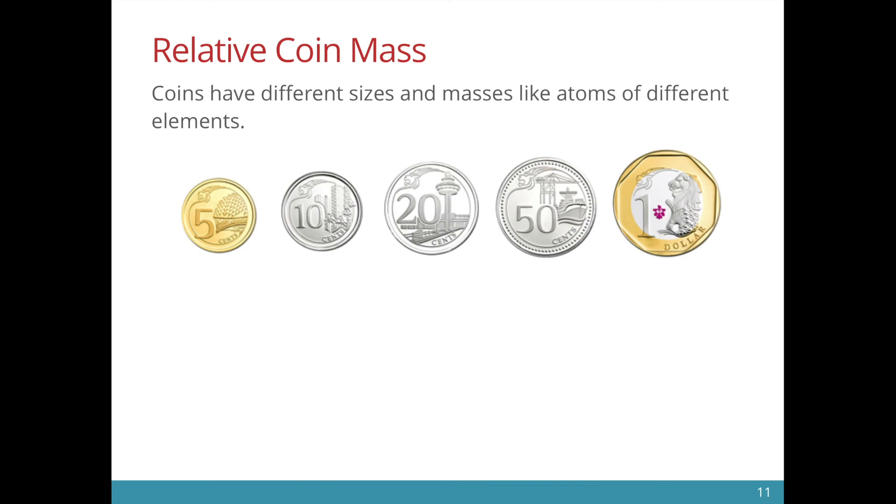These are all the Singapore coins. We have the five cents to the one dollar coin. So like atoms they have different sizes and different masses. If we were to weigh all the coins this would be the mass of each coin. The values you see here are the actual mass.